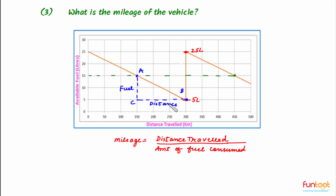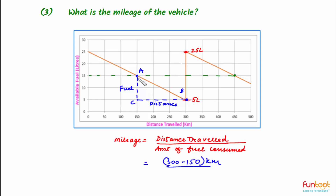BC is the horizontal distance between the points, representing distance traveled, and AC is the vertical distance, representing the amount of fuel consumed. From the graph, distance traveled is 300 minus 150 = 150 kilometers, and fuel consumed is 15 minus 5 = 10 liters. So mileage = 150 divided by 10 = 15 kilometers per liter.